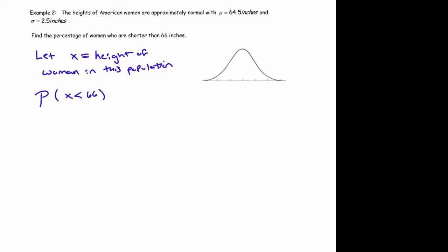So we draw a picture. We put our mean in the middle. So the mean height for all women is 64.5 inches. Now 66 inches is over here, it's to the right of the mean. You don't really need to worry about these tick marks, you just need to make sure you're on the right side. Let's just say 66 inches is roughly here.